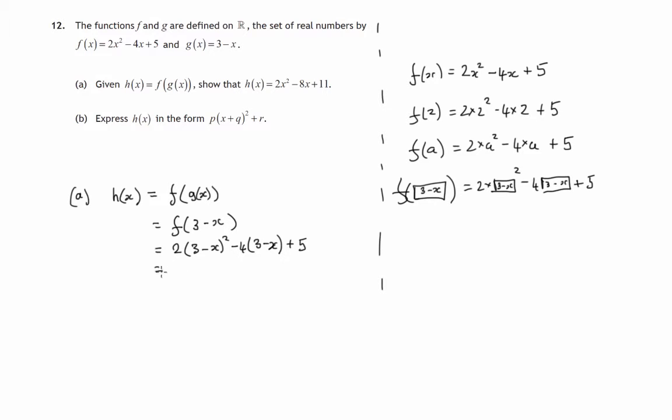So we've got a bit of working out to do. 3 minus x times 3 minus x. Firsts give us 9. So remember, we have to double all that in a minute. Outside 2 minus 3x, inside 2 minus 3x, so that's minus 6x. And then the last, negative x times negative x gives us positive x squared. So we have to double all that. Now we've got a minus 12 and a plus 4x when we get rid of these brackets. So we have 18 minus 12x plus 2x squared. That's after doubling each of these terms. And minus 12 plus 5 would be minus 7. And then plus 4x.